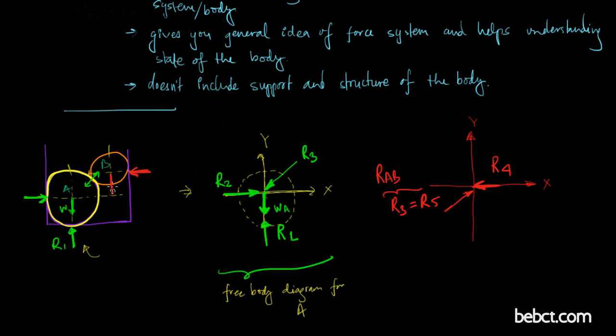And there is a weight of ball B which is directly downwards and I can just show like that. So this is weight of ball B which is downwards. So this is free body diagram.